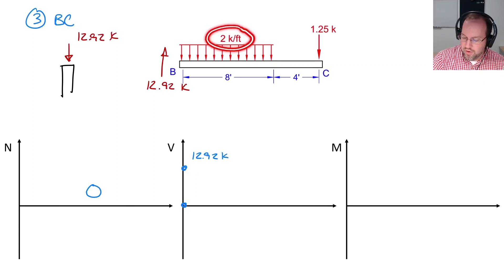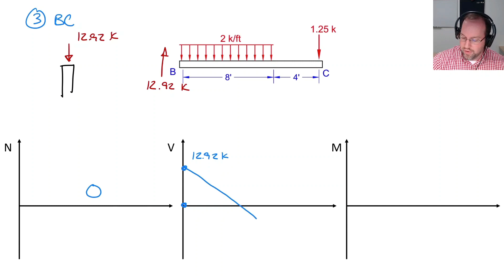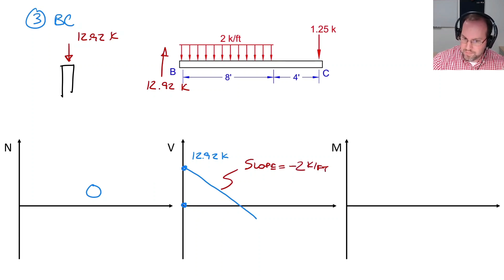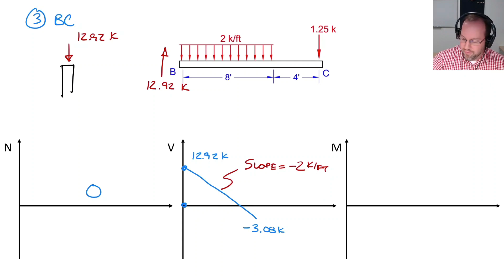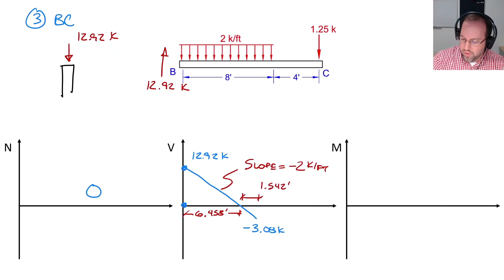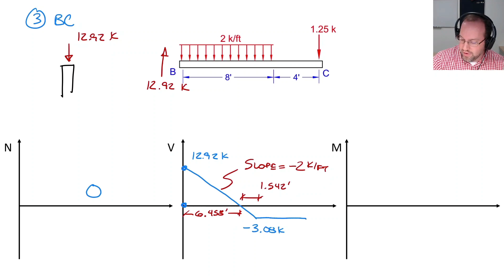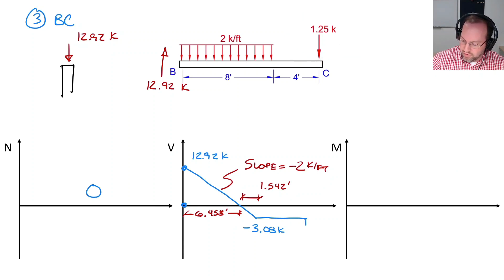The distributed load of 2 kips per foot downward gives a slope of negative 2 on the shear diagram. The zero-crossing occurs at 6.458 feet, leaving 1.542 feet to the end of the distributed load region at 8 feet. From 8 to 12 feet there is no load so shear is constant. At 12 feet, a downward point load of 1.25 kips causes a jump, giving a final shear value of negative 4.33 kips.